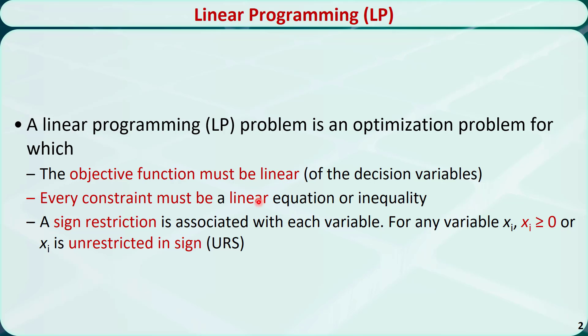Every constraint must be a linear function or linear inequality. A sign restriction is associated with each decision variable. For any variable xi, it must be greater than or equal to 0, or it is unrestricted in sign URS, which means xi can take positive numbers, negative numbers, or 0.